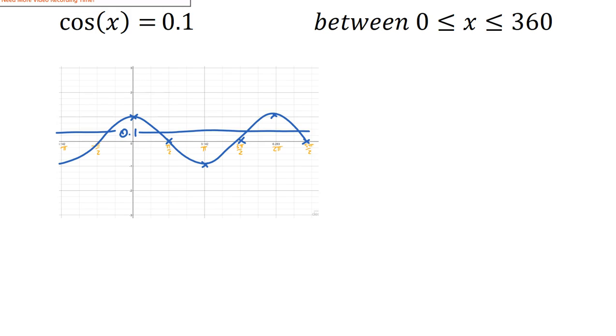Now, how many solutions would I have between negative pi and 5 pi over 2? I would have 1, 2, 3, 4 solutions. But I'm not talking about that interval, I'm just talking about 1 and 2. Is everyone happy with that? There are my two solutions. So 1 right there, and 1 right there. So how do I find those solutions?